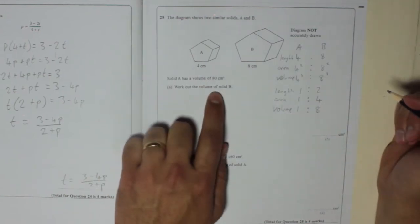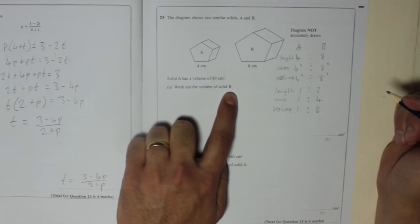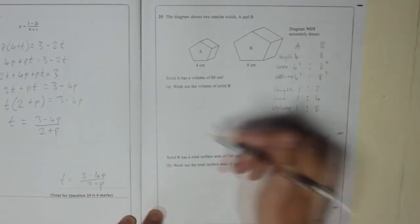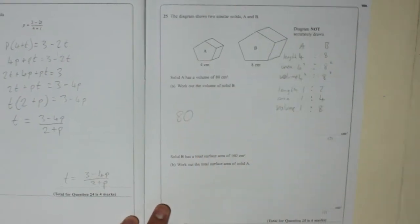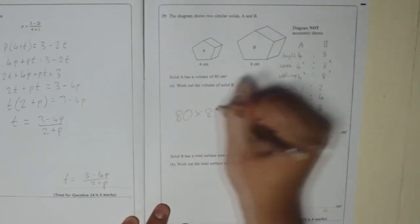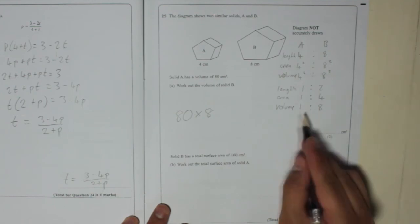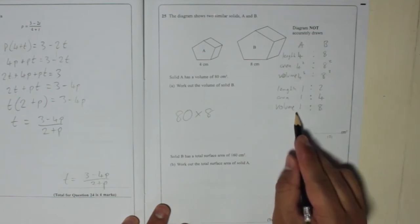So to work out the volume of solid B, if the ratio is 1 to 8, you take the volume of solid A, 80, and times that by 8 because the ratio is 1 to 8.